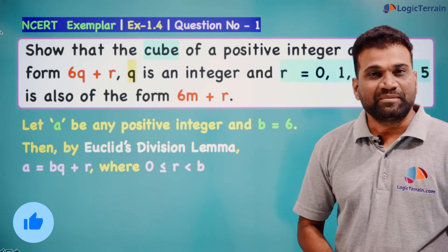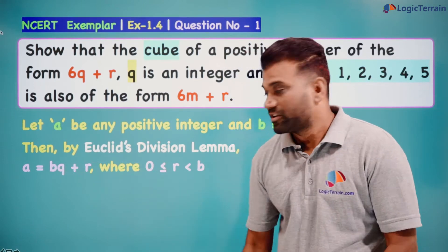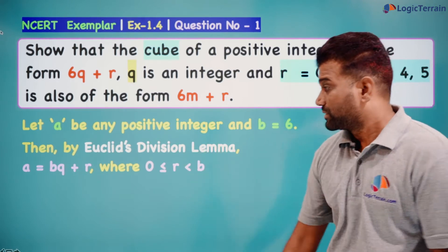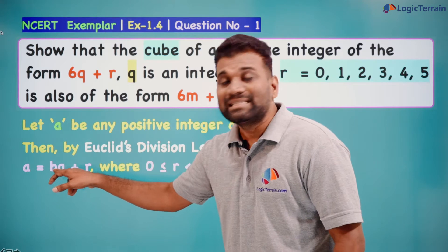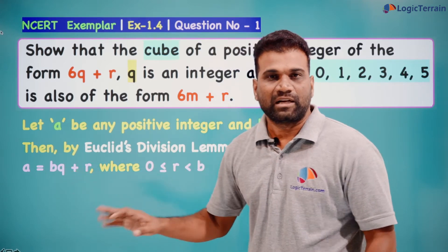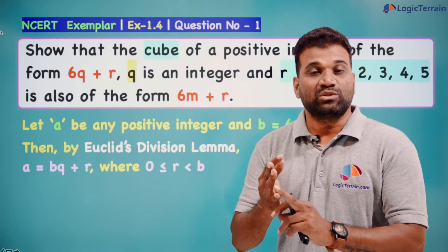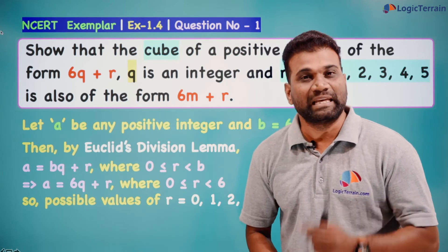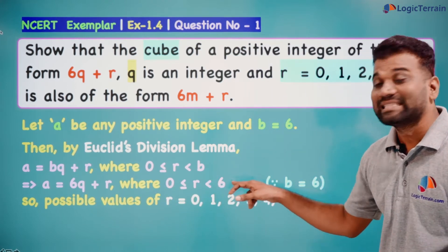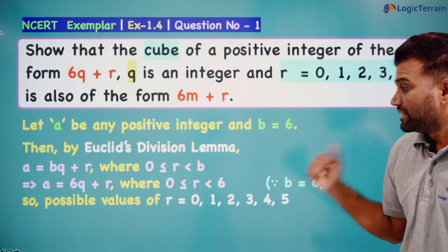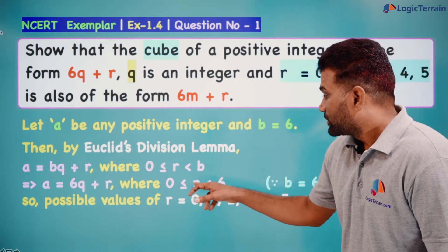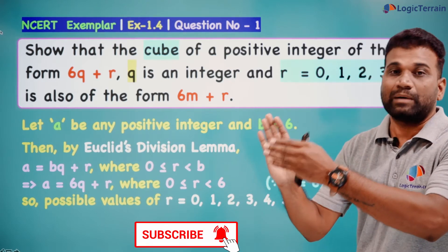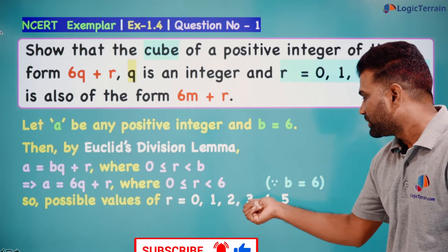By Euclid's Division Lemma: a = bq + r, where 0 ≤ r < b. Here a is the dividend, b is the divisor, q is the quotient, and r is the remainder. The division rule states: dividend equals divisor into quotient plus remainder. Since b equals 6, this becomes a = 6q + r, where 0 ≤ r < 6. So the possible values of r are 0, 1, 2, 3, 4, and 5.